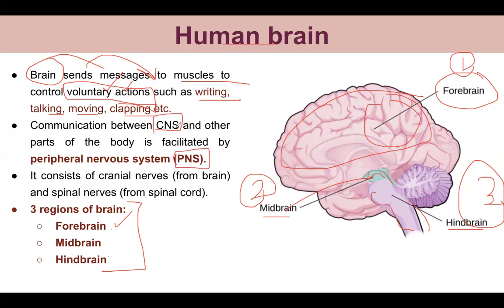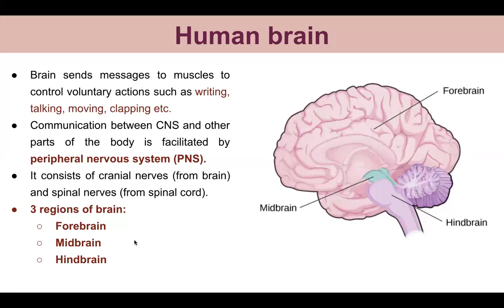The communication between the CNS and the rest of the body parts is facilitated by the PNS - the peripheral nervous system. The PNS is made up of cranial nerves, which come from the brain, and spinal nerves, which come from the spinal cord. Now let's talk about the forebrain.